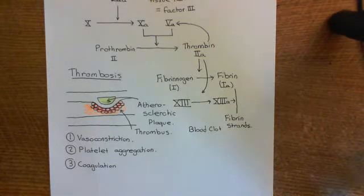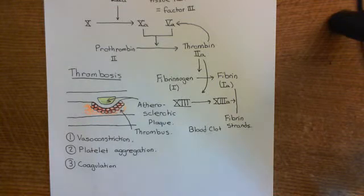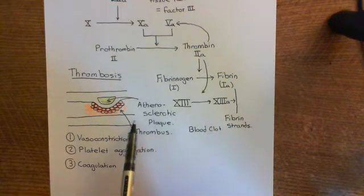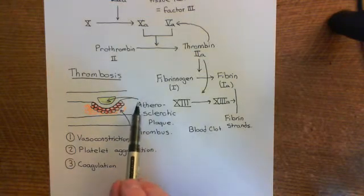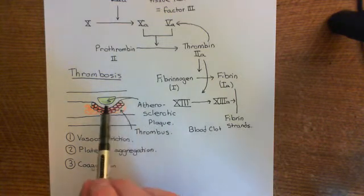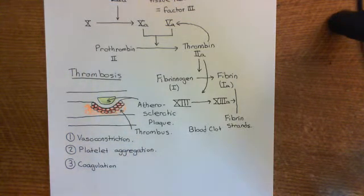Welcome to this next video in which we're discussing thrombosis and antithrombotic drugs. Thrombosis is really the activation of the hemostatic pathway inappropriately — the activation of the hemostatic pathway even though you've got no hole in the side of your blood vessel. Often what will happen is you've got some sort of disease of the endothelium, such as an atherosclerotic plaque, which is an inflammatory response occurring just underneath the endothelium in the subendothelial space.